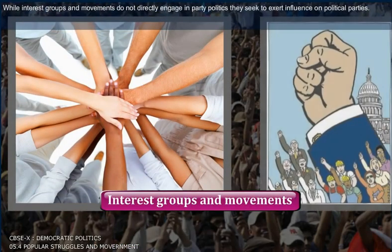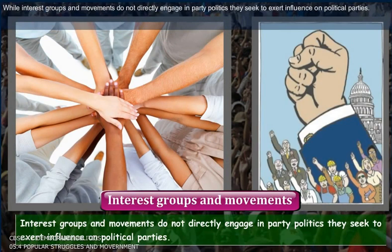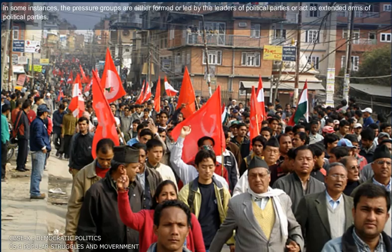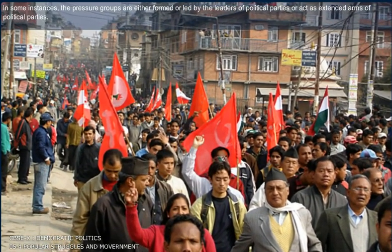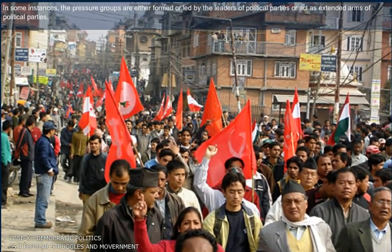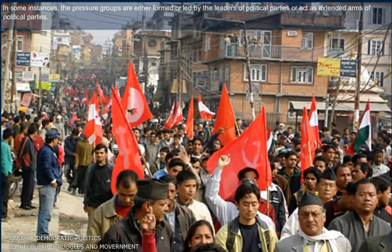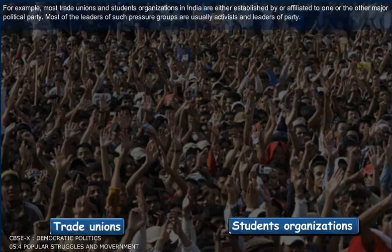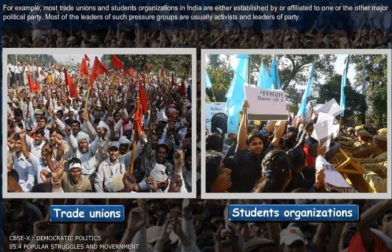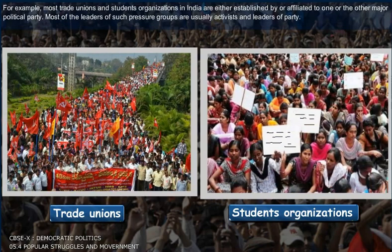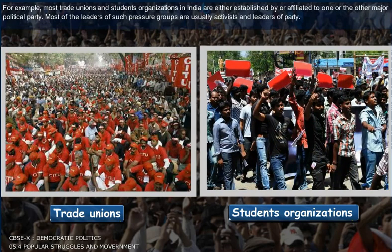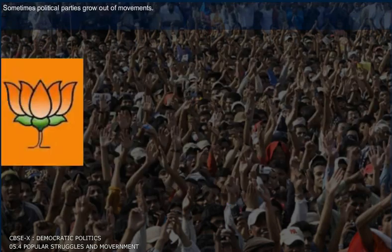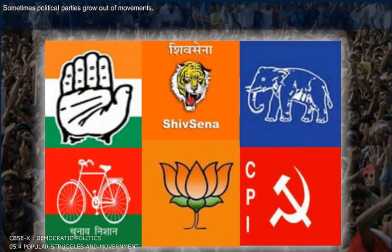While interest groups and movements do not directly engage in party politics, they seek to exert influence on political parties. In some instances, the pressure groups are either formed or led by the leaders of political parties, or act as extended arms of political parties. For example, most trade unions and student organizations in India are either established by or affiliated to one or the other major political party. Most of the leaders of such pressure groups are usually activists and leaders of the party. Sometimes political parties grow out of movements.